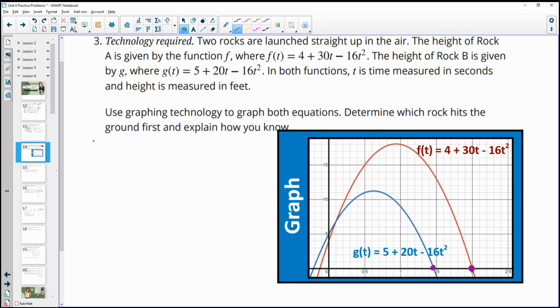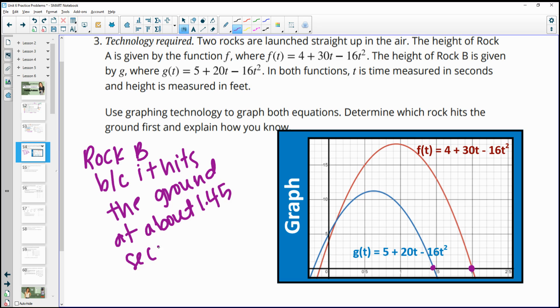So G was rock B. And that's because it hits the ground at about 1.4 seconds maybe. Well, actually more than that, because this is 1.1234, so like 1.45 seconds. And A hits at two seconds. So that's one way you could say it. You could say, you know, because the zero of graph G is further, is closer, you know, is further to the left.